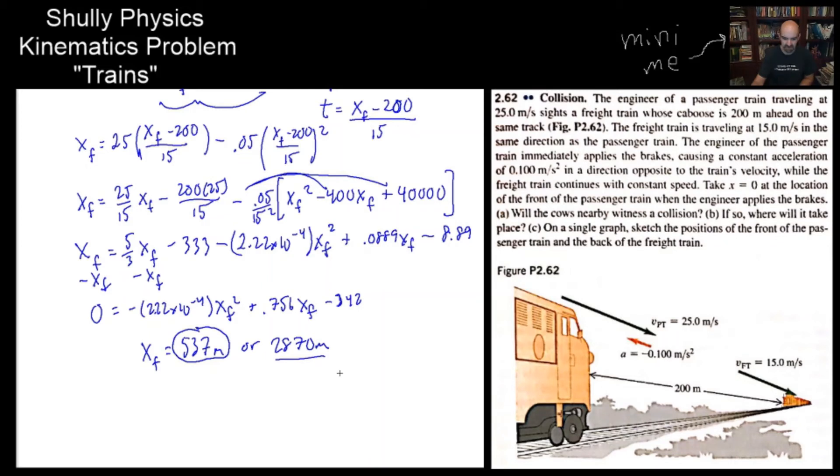So that's part B. So part A, just to answer it, yes, they will collide. There is a solution. Part B is 537 meters. That's the position past that initial point. And for the graphing part, on a single graph, sketch positions of the front of the passenger train and the back. This is just a sketch, so it doesn't need to be too fancy.